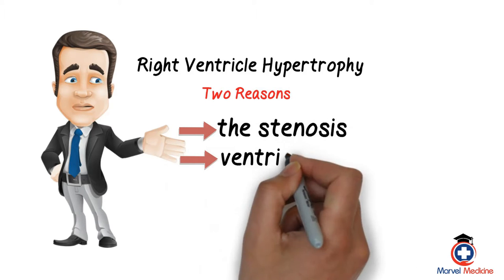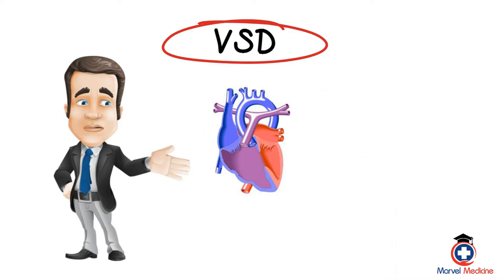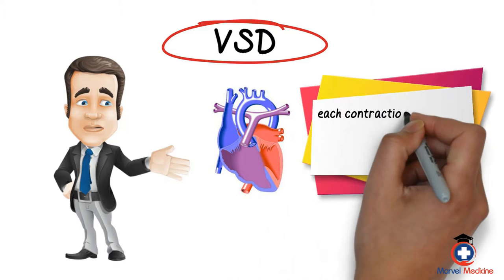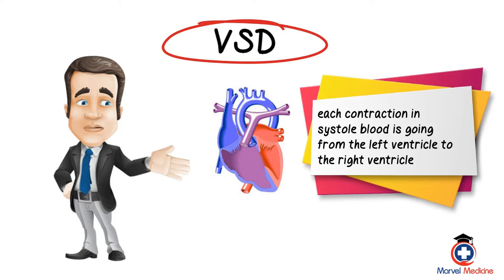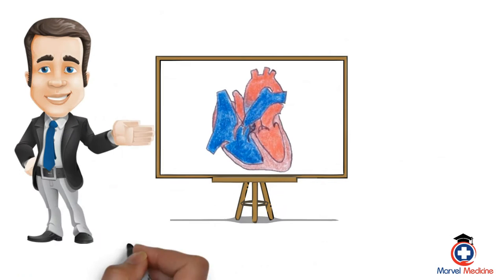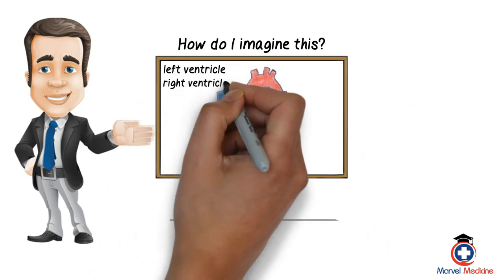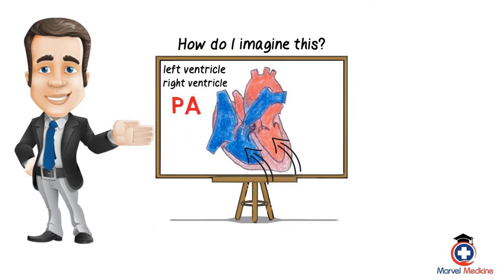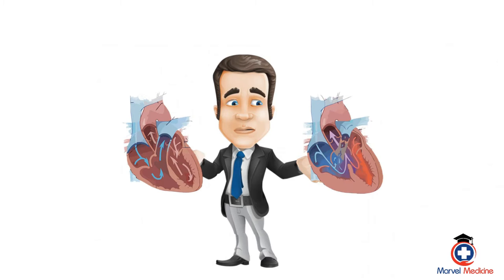And second, the ventricular septal defect, which happens to be the third thing. Picture the big right ventricle and a defect where, with each contraction in systole, blood is going from the left ventricle to the right ventricle and then back to the lungs over and over. The last thing to remember is the overriding aorta. Normally the aorta leaves the left ventricle and the right ventricle has the pulmonary artery. But imagine the aorta sitting right in the middle, with blood from both right and left ventricles going into the aorta.